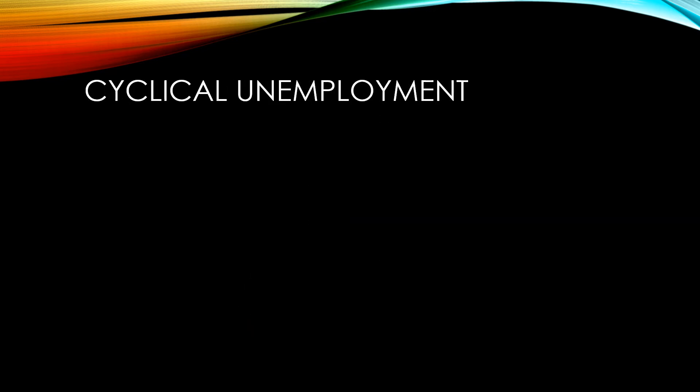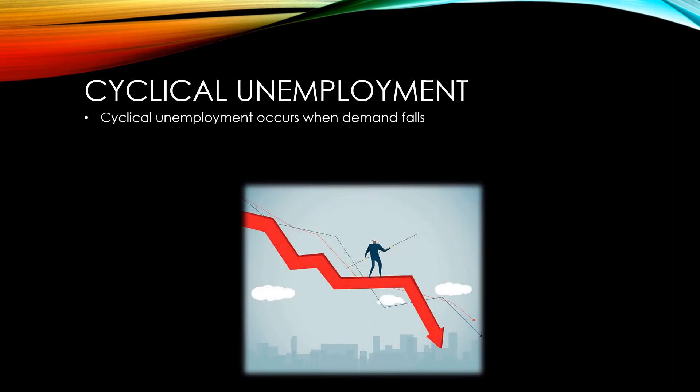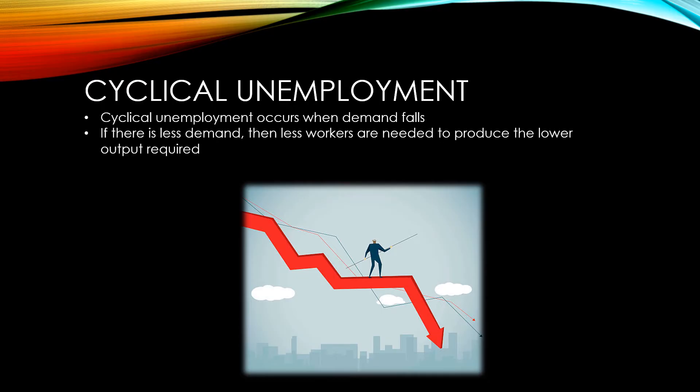Cyclical unemployment happens when demand is falling. If demand is lower, then less output is required by firms and therefore fewer workers are needed to produce this lower amount of output. Cyclical unemployment can be a big problem because it can lead to a vicious circle. As more people become unemployed, they have less money to spend and less money goes into the economy. This means demand falls further and once again fewer workers are needed to produce the required output.